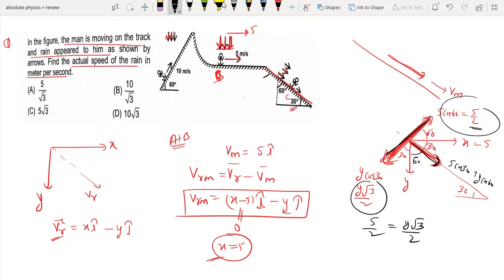To find the speed, we need to use the formula x² + y². This is equal to 10/√3, which is option number B.